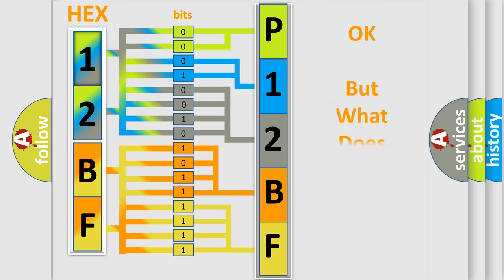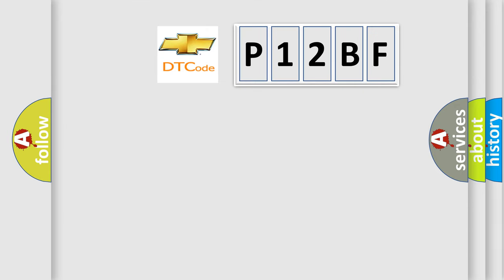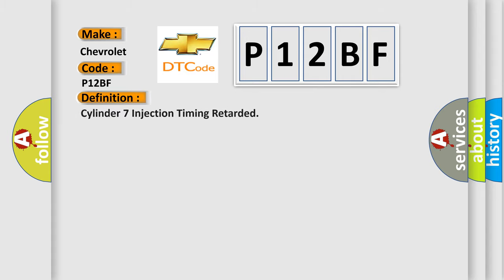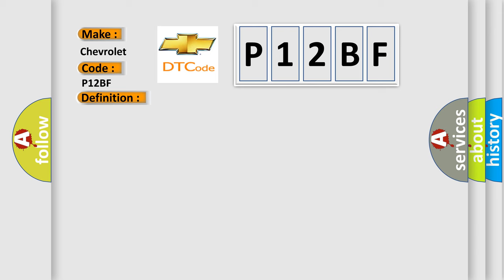The number itself does not make sense to us if we cannot assign information about what it actually expresses. So, what does the diagnostic trouble code P12BF interpret specifically for Chevrolet car manufacturers? The basic definition is: Cylinder 7 injection timing retarded. Here is a short description of this DTC code.